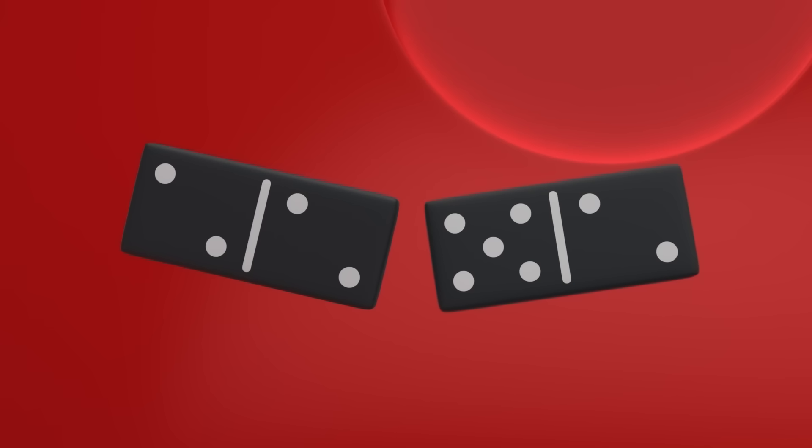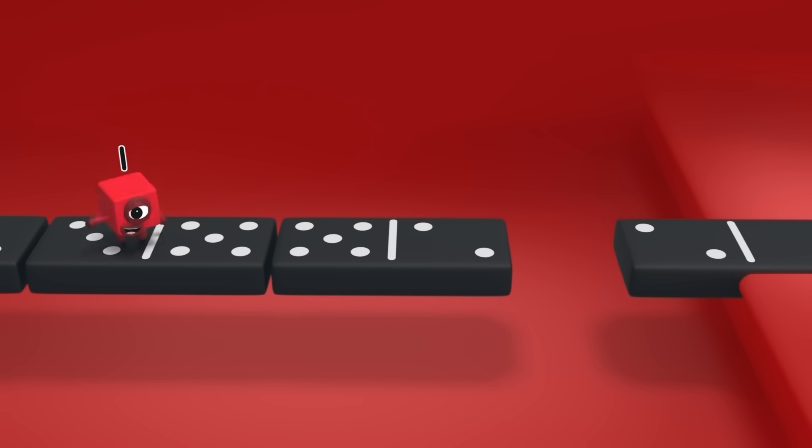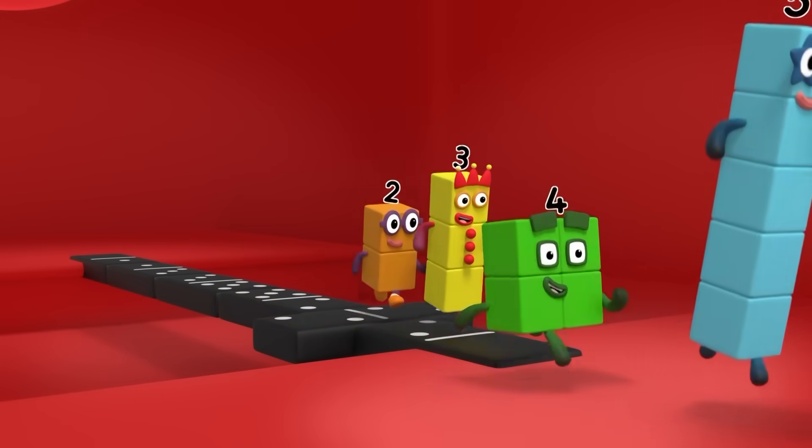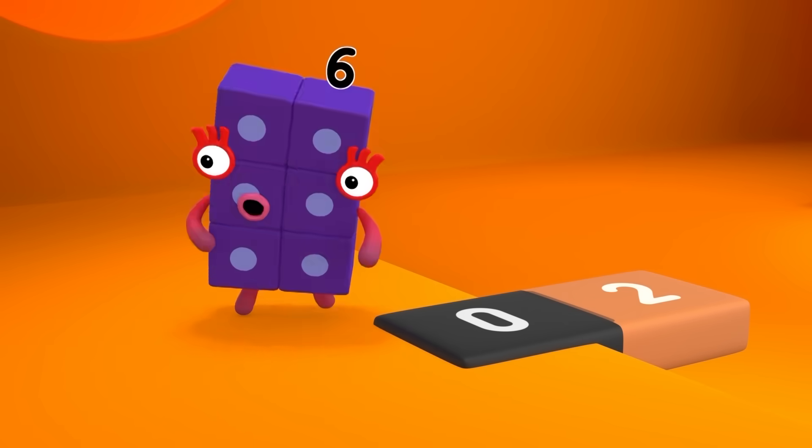My turn. Five spots on that one. Thanks, five. Two spots on the domino, two on the ledge. We need a double. Oh, brilliant! Hooray! Yay! Woo-hoo! Level two.